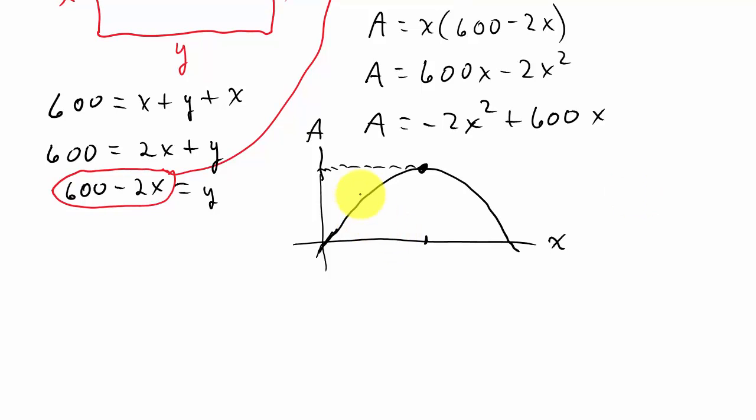Alright, so remember how to find the vertex when it's in this form. Minus b over 2a is our X coordinate. So minus b over 2a is going to be negative 600 over 2 times negative 2, and that's going to be 150.